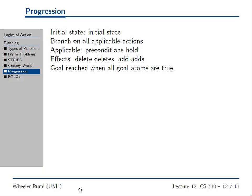One way to do STRIPS planning is just the same way you did assignment one. You start at the initial state, branch on all applicable actions — an action is applicable if the preconditions hold in the current state — then to get the successor state, you delete the deletes and add the adds. When all the goal atoms are true, you've hit the goal. Assignment three is basically assignment one, except now you're doing it with STRIPS. This is called progression, because you're starting from the initial state and going forward.